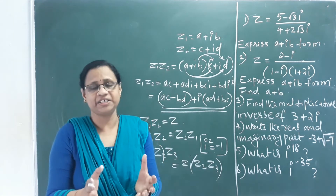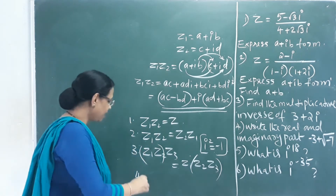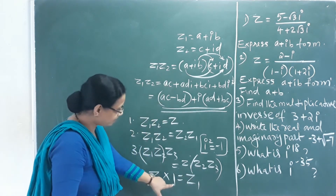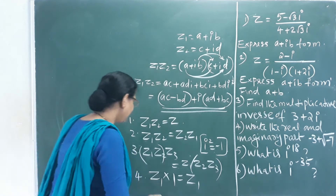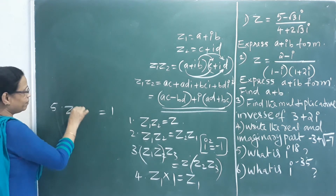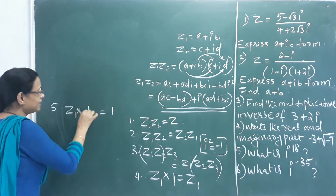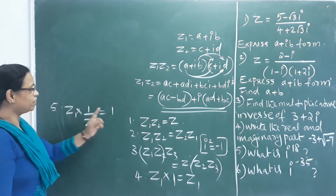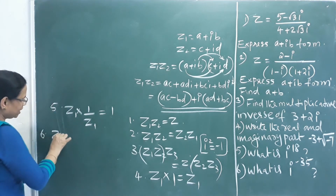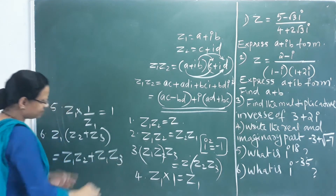The multiplicative identity is 1 — multiplying any complex number by 1 returns the same number. The multiplicative inverse of a complex number gives 1 when multiplied together; we use the reciprocal. There is also the distributive property: Z₁(Z₂ + Z₃) = Z₁Z₂ + Z₁Z₃.